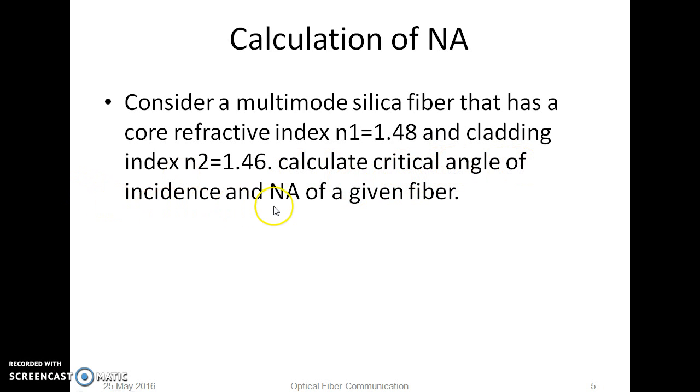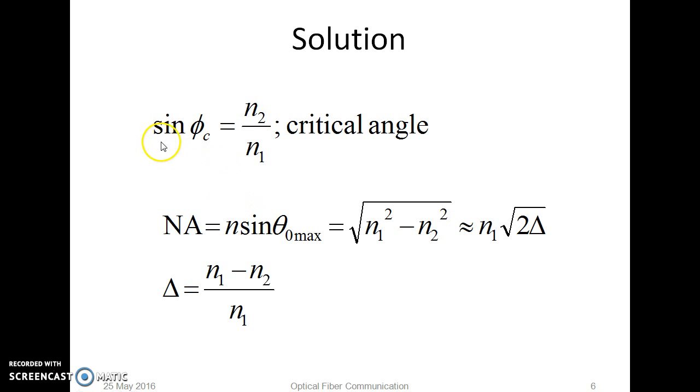What is critical angle of incidence? As the name suggests, it is the angle where total internal reflection is possible in optical fibers. This angle is represented by the formula sin φc equals n2 by n1, where n2 is the cladding refractive index and n1 is core refractive index.